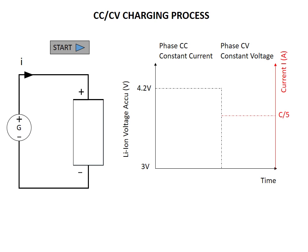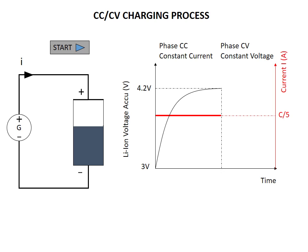Let's start the simulation. Because the cell is empty at the beginning, we start at 3V. We can see that the voltage is increasing slowly from 3V to 4.2V, and the current is logically a straight line because we are in the constant current step. I use here a constant current of C over 5, which means that, for example, with a battery of 1000 mAh, I use a current of 200 mAh.